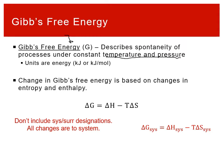Gibbs free energy still describes the same fundamental idea — spontaneous processes always correspond to an increase in entropy of the universe, per the second law. The qualifications of constant temperature and pressure simply mean you're in a lab, working under whatever temperature and pressure the air is at. Those are basically the chemically useful conditions, which is why Gibbs free energy applies so broadly.